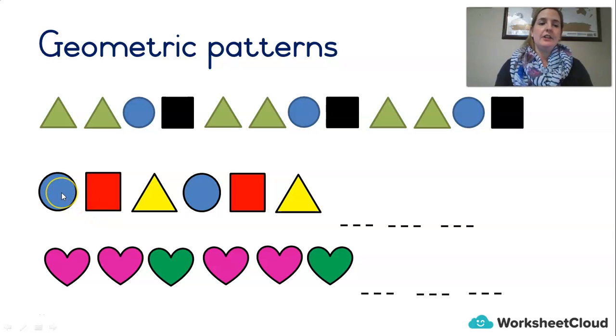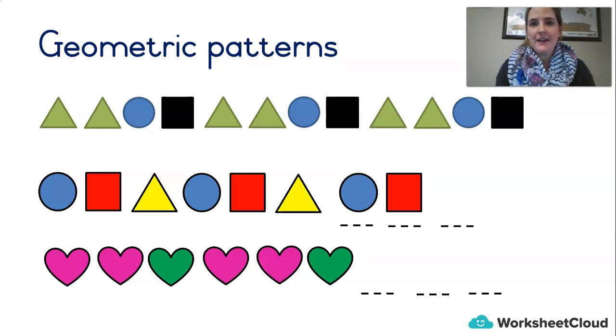So let's have a look at this one. There's a blue circle, red square, yellow triangle. Blue circle, red square, yellow triangle. What comes next? Did you get it? Right, blue circle and then red square and finally - yes, yellow triangle and there we have it.